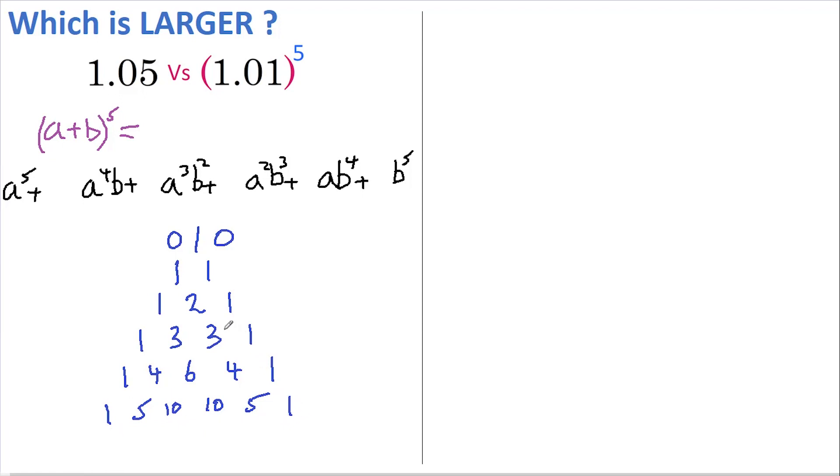Which we just need to write in above. So this is our 1, this is our 5, this is a 10, this is a 10, this is a 5, and this is a 1. And now all we have to do is evaluate this.